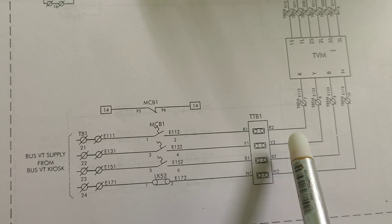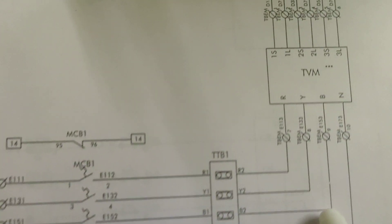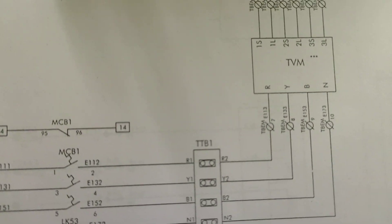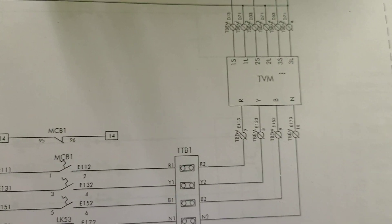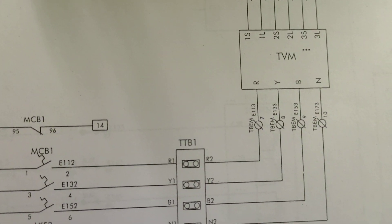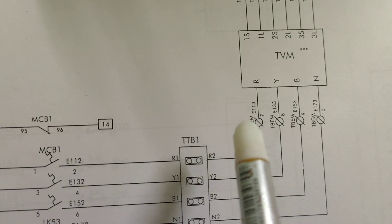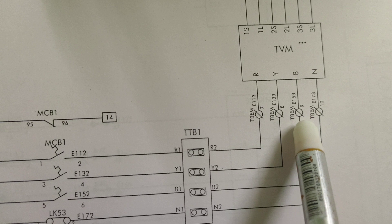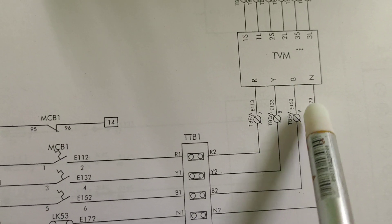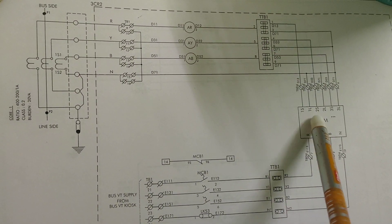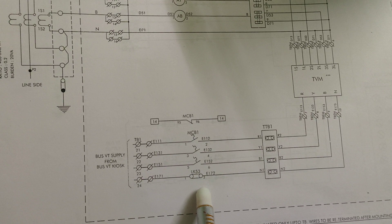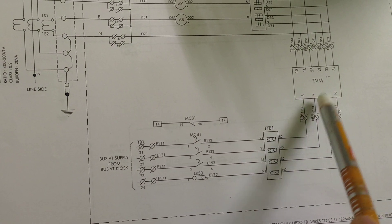From the TTV, the signal goes inside the TVM. The TVM inputs are E113, E133, E153, and E173. So from the CT side, connections come to the TTB and then to the TVM. From the VT side, there is first an MCB, then the TTV, and then it goes to the metering circuit energy meter.